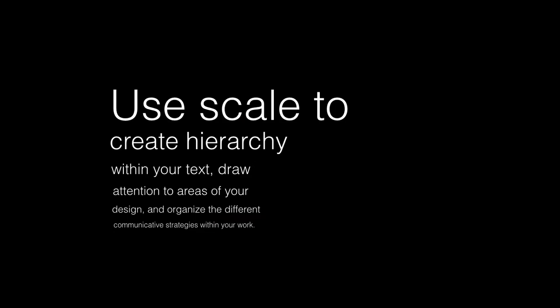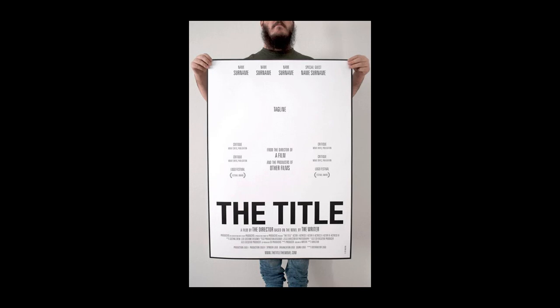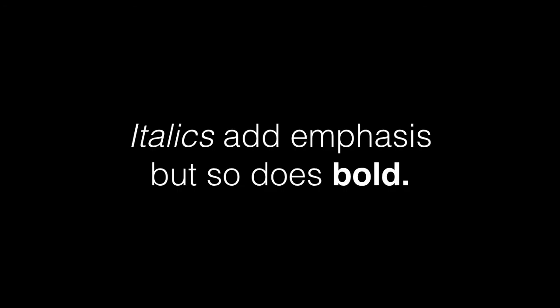Using scale creates hierarchy within your text, and you can see the scale shift that helps you organize a different communicative strategy within your work. Bold sans serif font is good for using in titles — hint, hint. Text is measured in points; you'll probably have papers that need to be in 12-point font. This is a sort of anatomy of a movie poster, and you can see the hierarchy of all the information. Italics add emphasis, but so does bold — think strategically about how you use those.